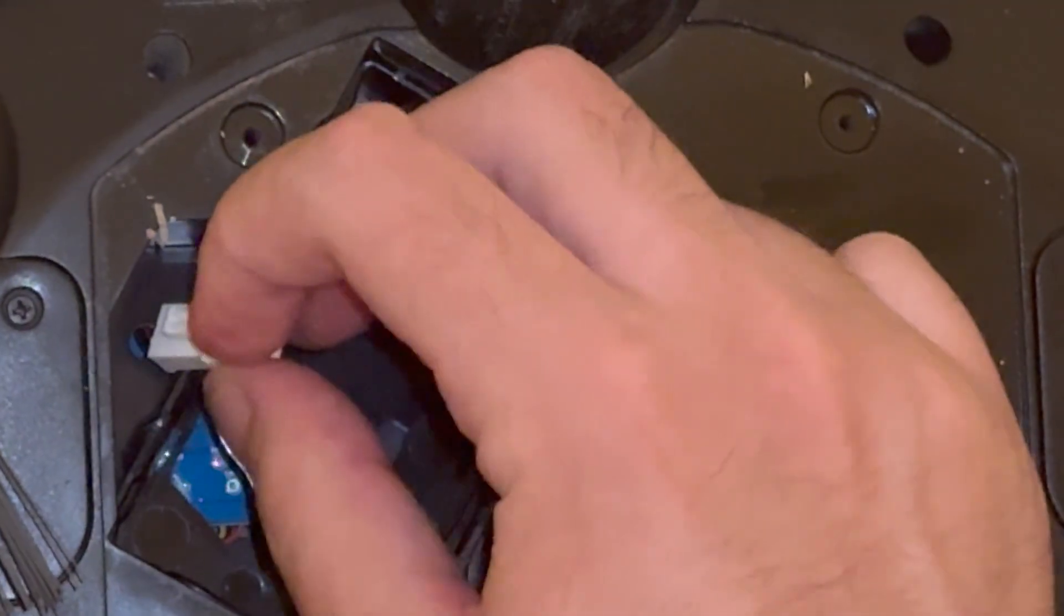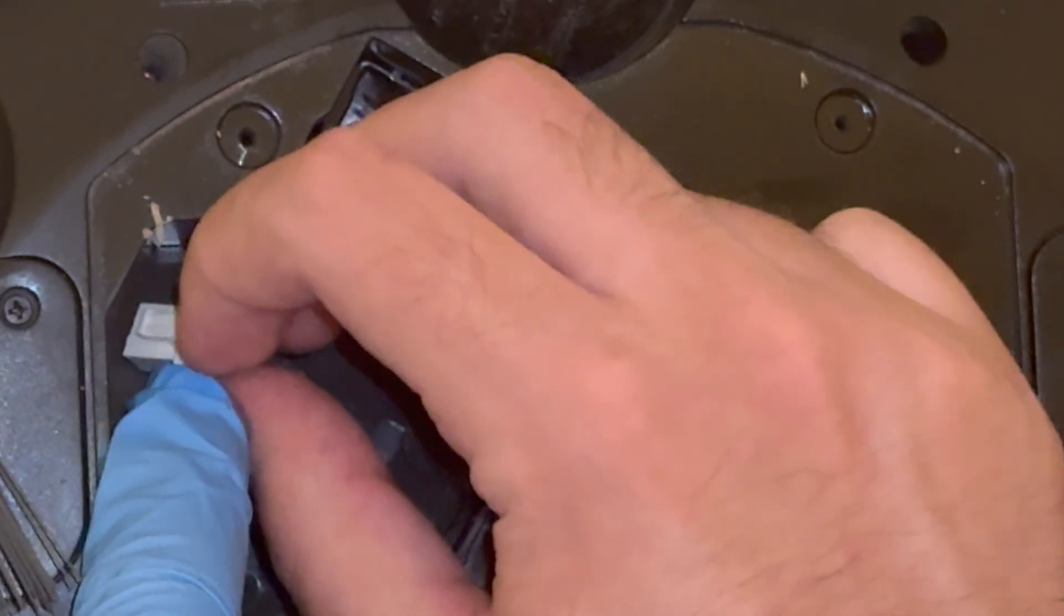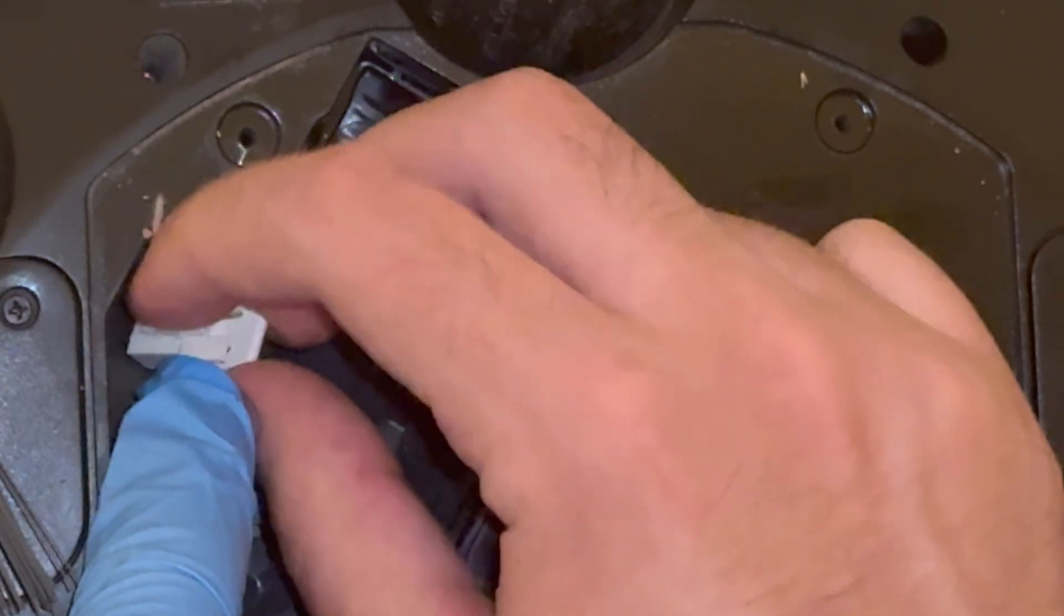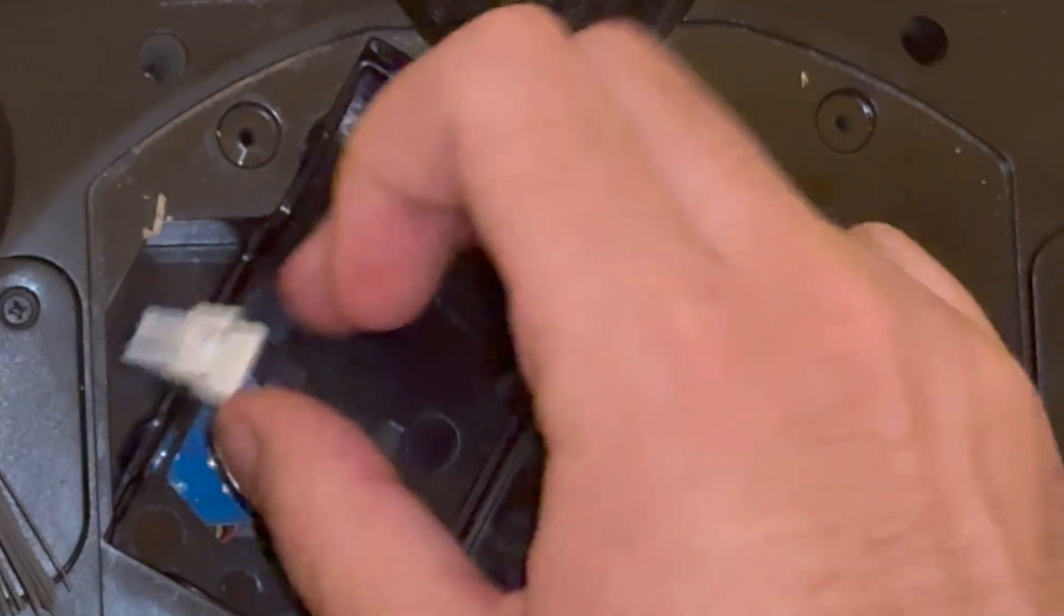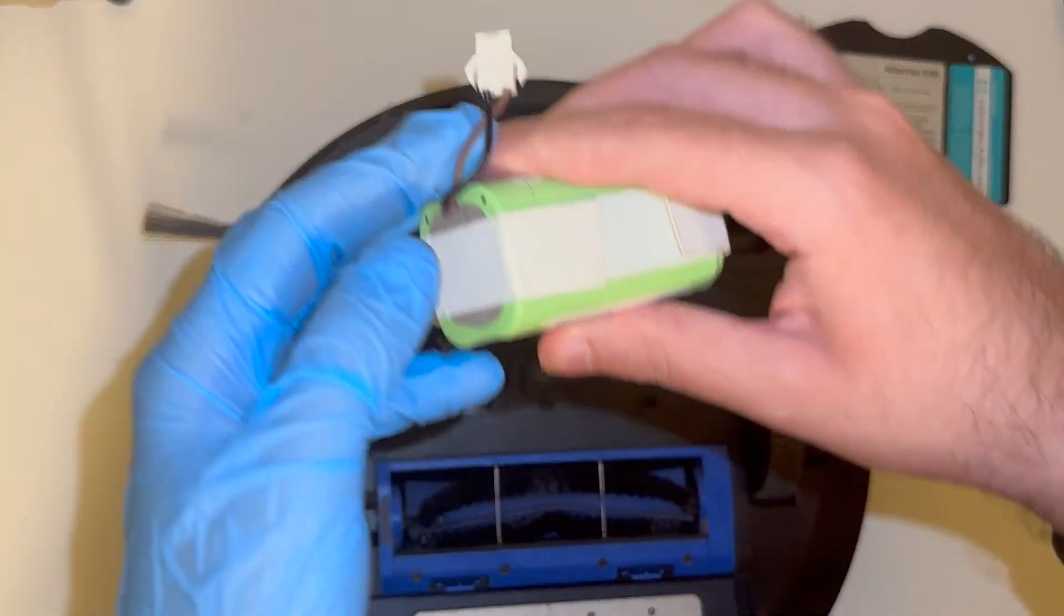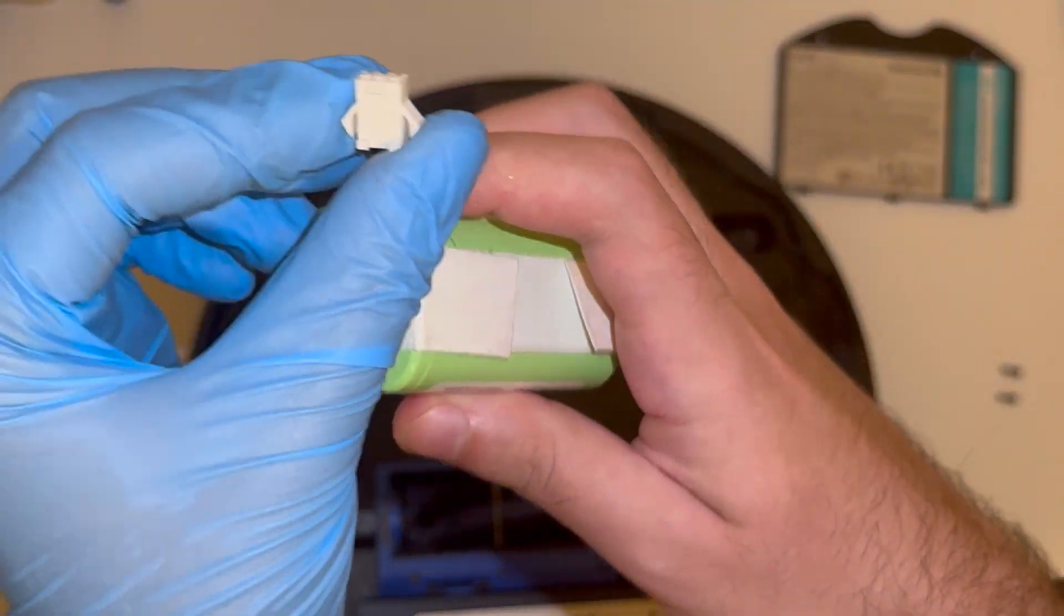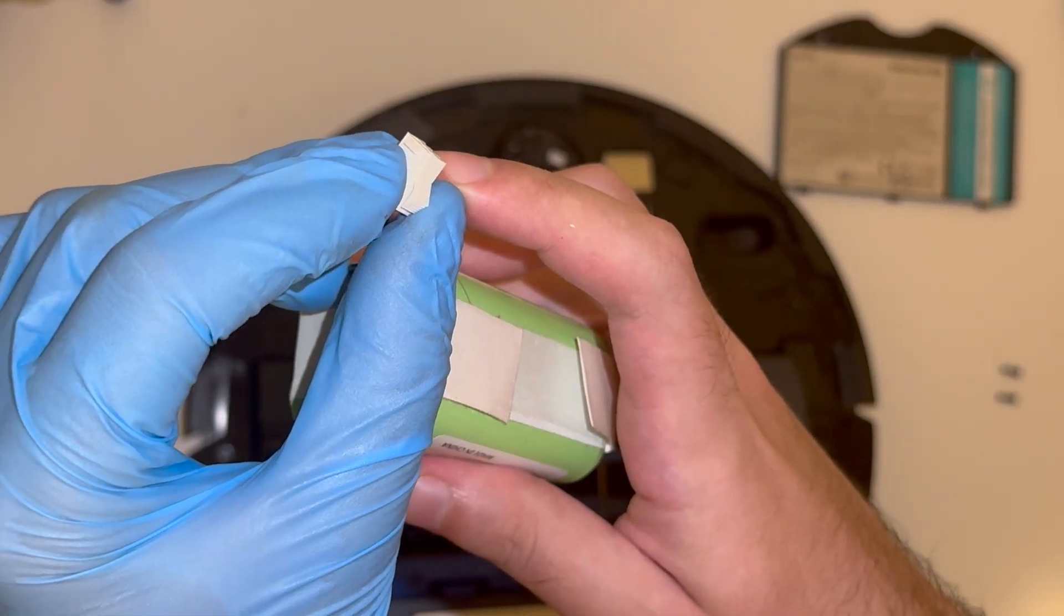So zooming in here you can see that's the tab that I had to lift up on with my finger. And you can see on the battery itself there's a plastic bump that that tab was holding onto.